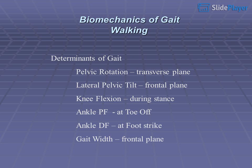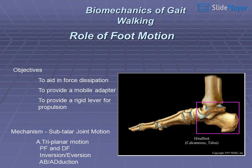The six determinants of gait are: pelvic rotation in the transverse plane, lateral pelvic tilt in the frontal plane, knee flexion during stance, ankle plantarflexion at toe-off, ankle dorsiflexion at foot strike, and gait width in the frontal plane.